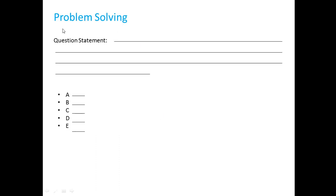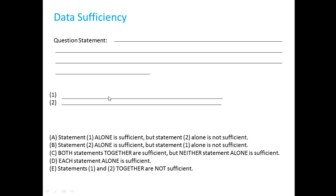The first part is problem solving questions. This is the same five-answer multiple choice format you have seen on any standardized test. You are given a question statement and five option choices, out of which only one is correct. The second part is data sufficiency.